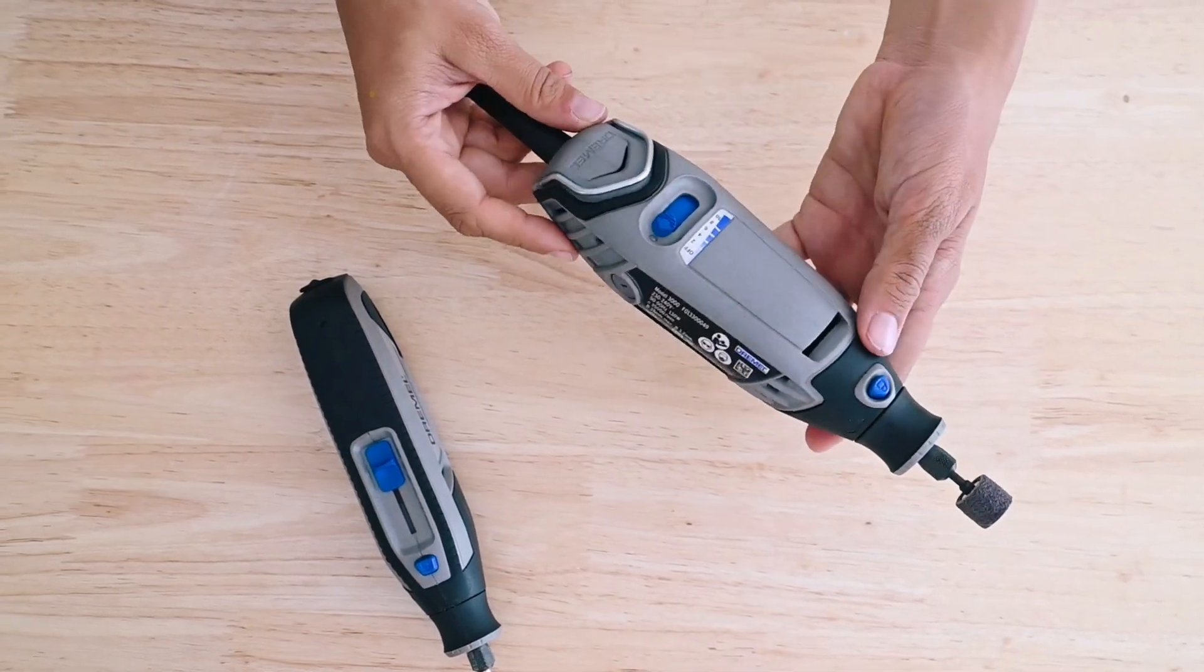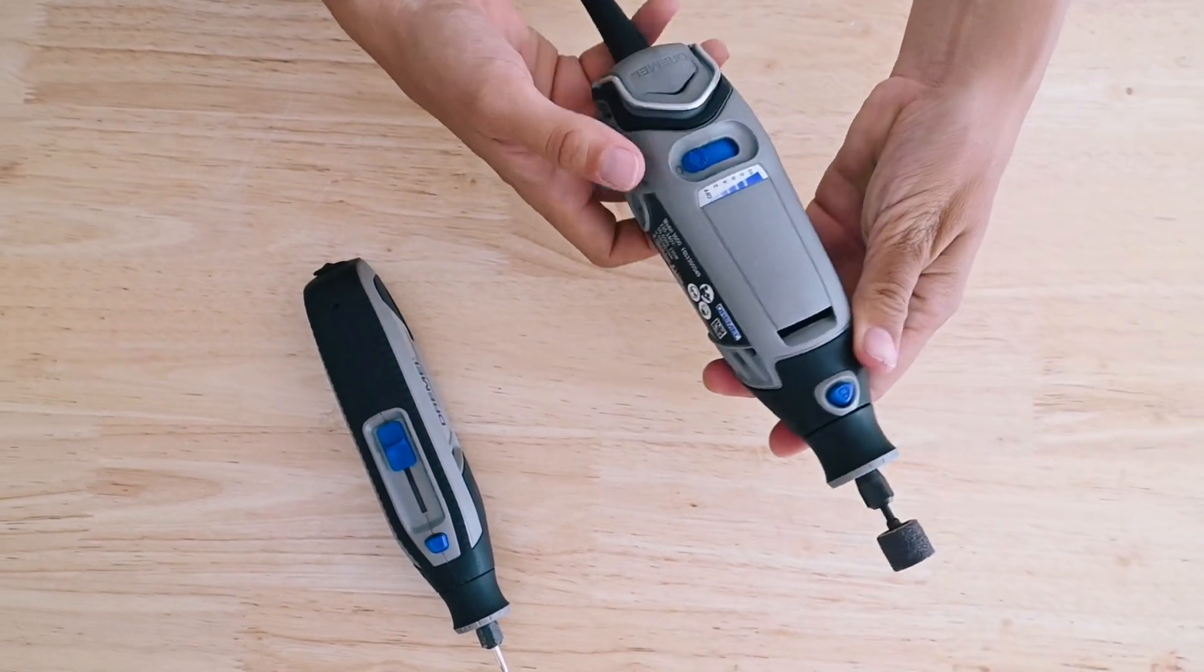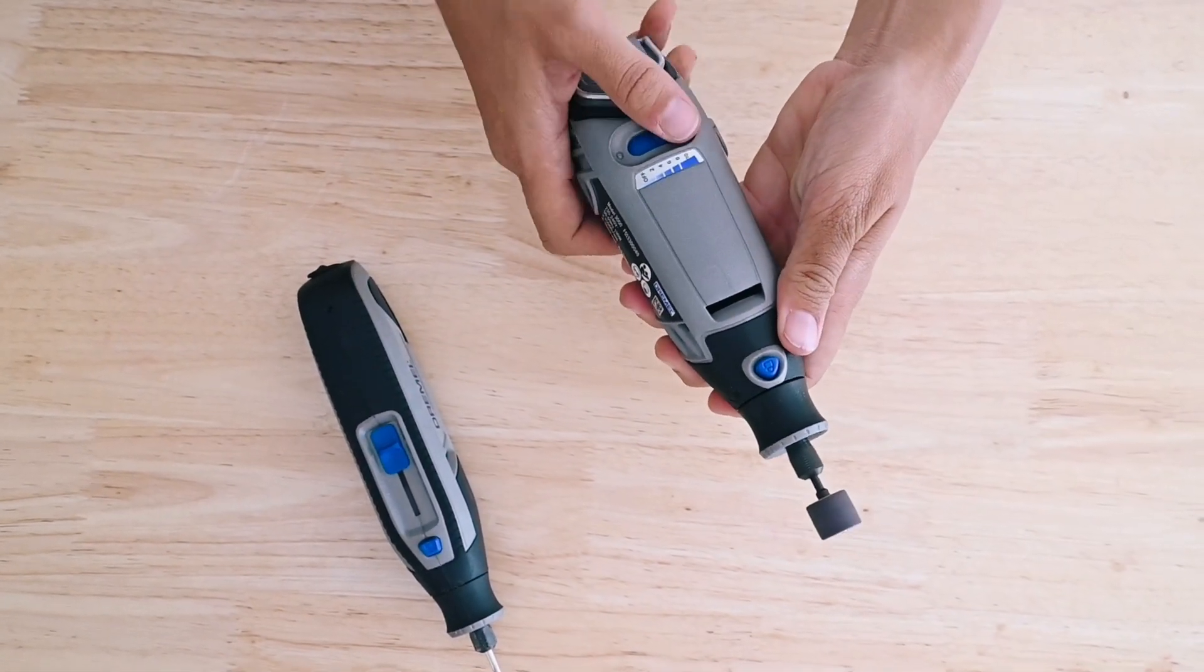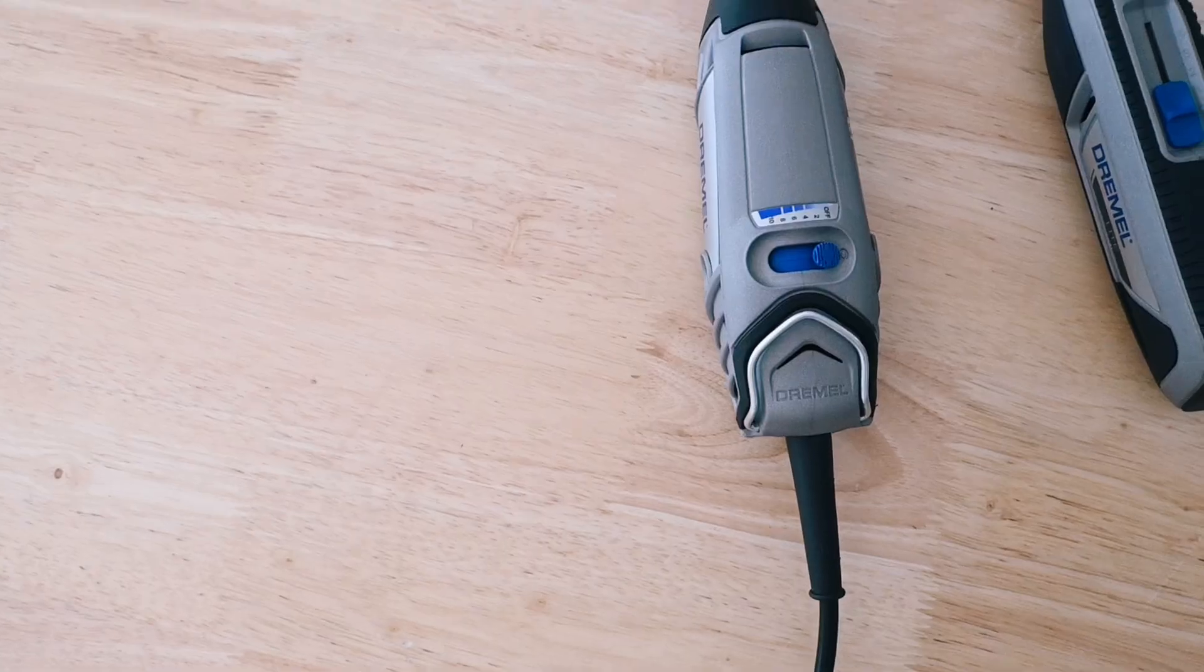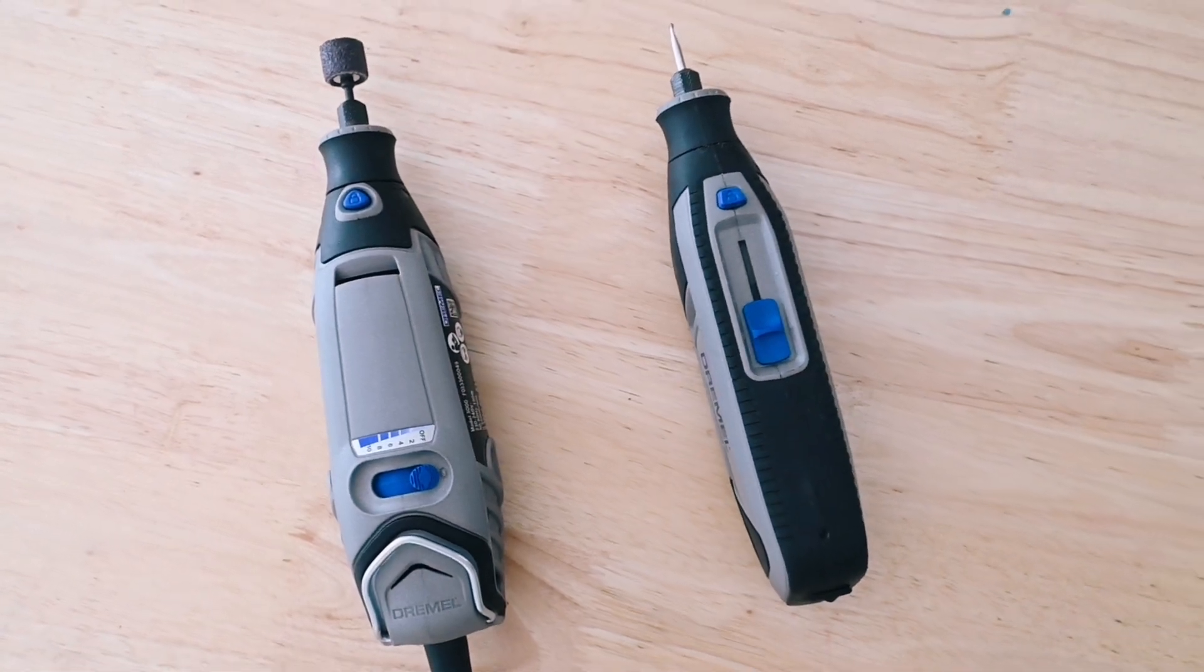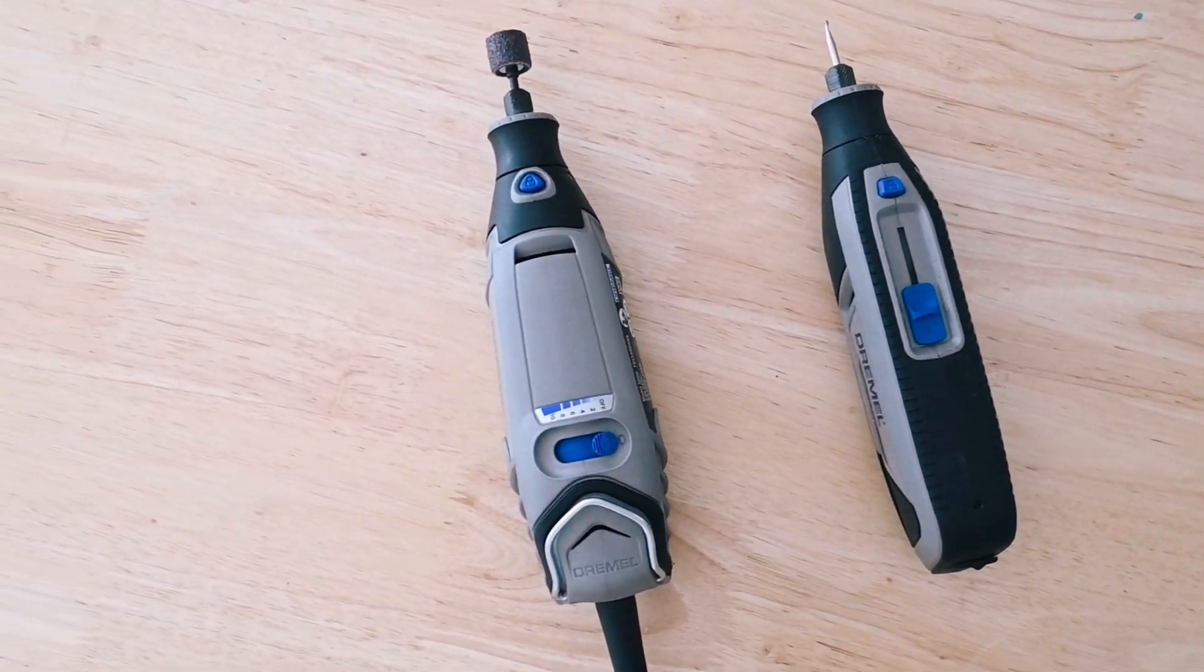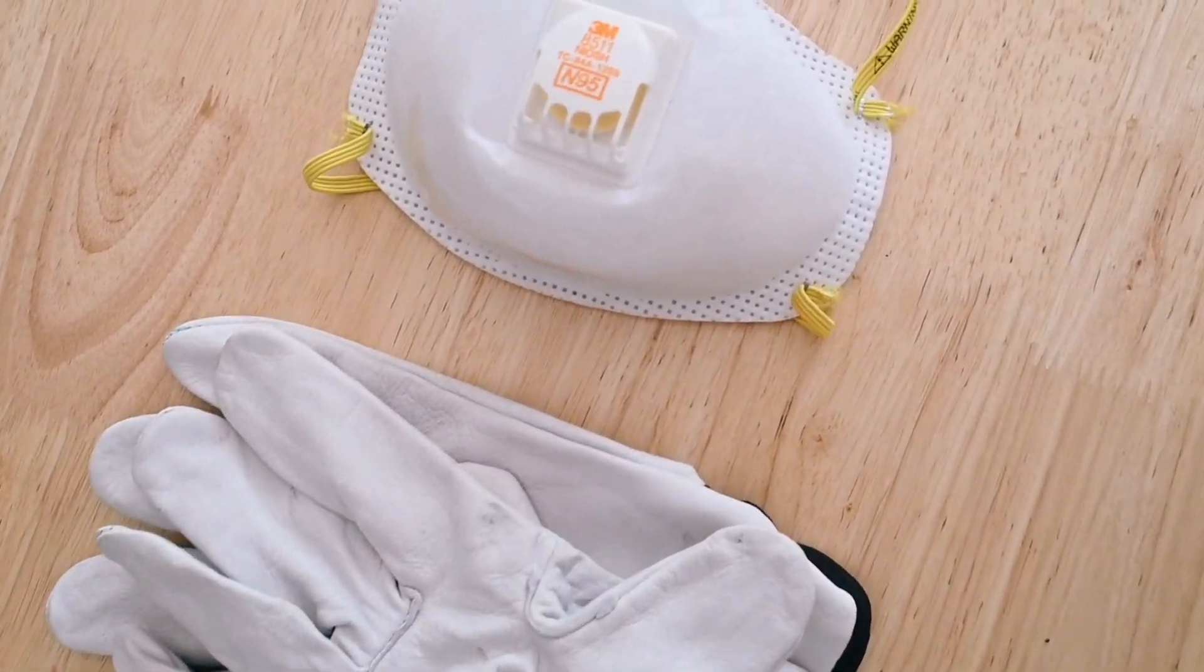There are a few different types of Dremel tools, and you can choose between one that is corded or one that's cordless. Corded tools are great for more heavy duty projects, whereas the cordless are great for more intricate designs. Different tools have varying RPM rates, so it's a really good idea to check that and decide based on the project that you want to do.